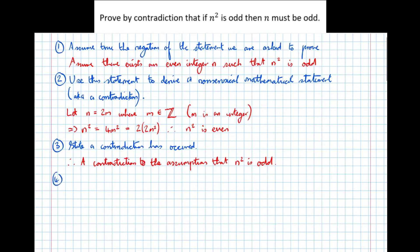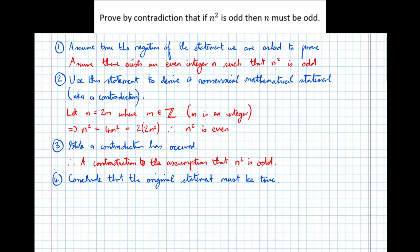Step four: conclude that the original statement therefore must be true. Therefore, if n squared is odd, then n must be odd. And there's the proof done.